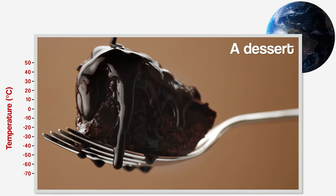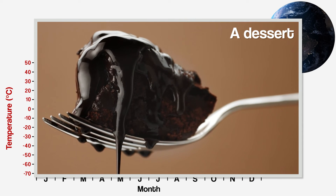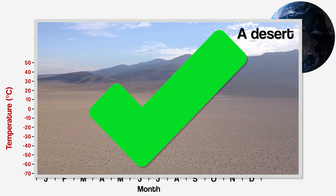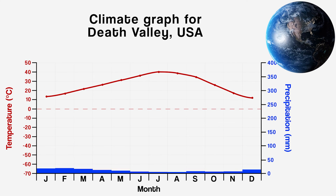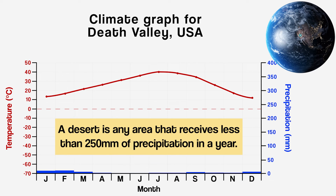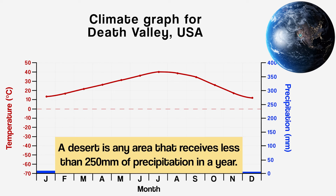How about a desert? Here's Death Valley in the USA. As you would expect, the precipitation is extremely low all year round. After all, it needs less than 250 millimetres across the whole year to technically be a desert. But you might be surprised by how much cooler it gets during some parts of the year.